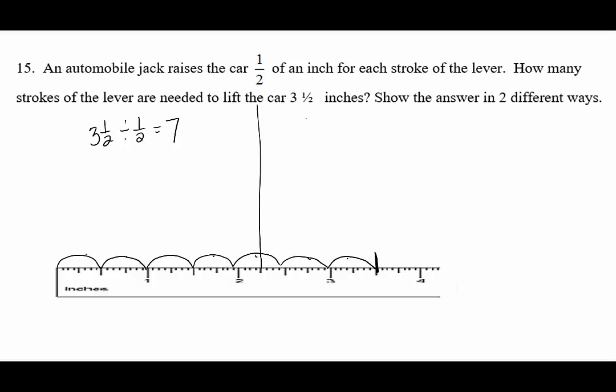Another way to do it is using the procedure three and a half divided by one half. We're going to change our mixed number to an improper fraction and now we're going to keep, change, flip. When you multiply fractions you should always try to cancel first. So we cancel the two and we get seven over one.